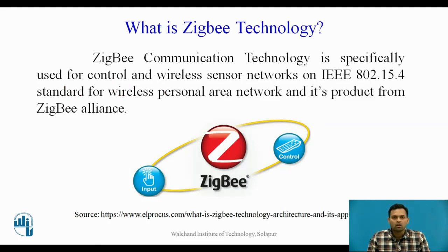Now we will start with what is Zigbee technology. Zigbee communication technology is specifically used for controlling and wireless sensor networks, based on the IEEE 802.15.4 standard for wireless personal area network, and it is a product from the Zigbee Alliance. The Zigbee module works on frequencies of 868 MHz, 928 MHz, and 2.4 GHz.